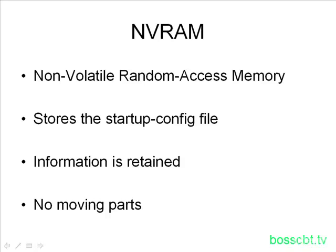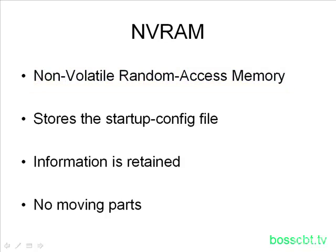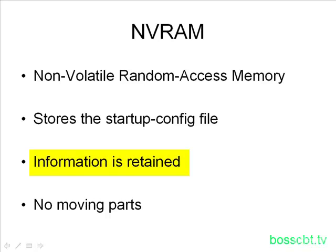Next, let's talk about NVRAM, which stands for Non-Volatile Random Access Memory. It's in the NVRAM where we find the startup configuration file. If you haven't checked out the other tutorial on configuration management, have a look at that — we cover the details of the startup config file. But for now, just know that if you need to locate it, this is where it's found, in the NVRAM. Information is always retained in this type of memory, so when you power off the switch and power it back on, the startup configuration file will still be there, unchanged.